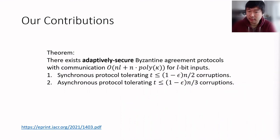A little bit more formally, what is our main contribution? Our paper basically says that there are Byzantine agreement protocols that achieve adaptive security. This means that the parties can become corrupted during the protocol execution. And the communication complexity is nl plus n times poly of kappa, as I said, for l bit inputs, meaning the optimal communication is achieved for sublinear-sized inputs.